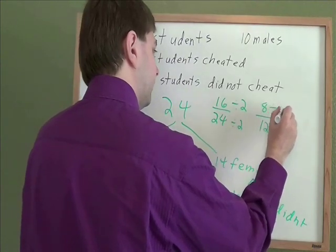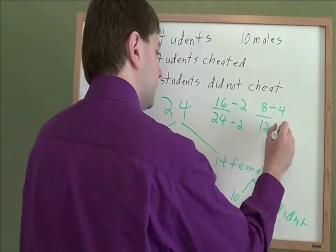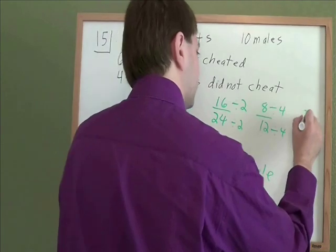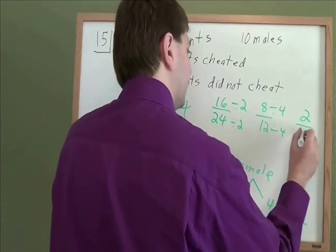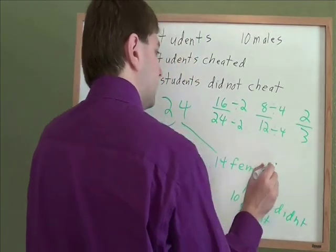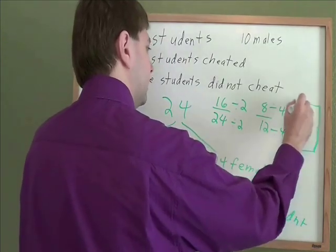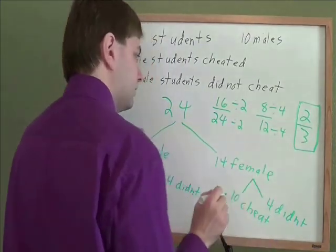And 8 and 12, hey, I remember now, both of those divide by 4. 8 divided by 4 is 2. 12 divided by 4 is 3. And there's nothing that these two both divide by except for 1. So your final simplified answer is 2 thirds.